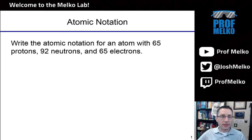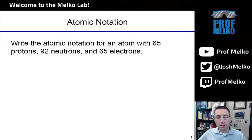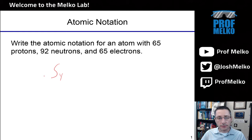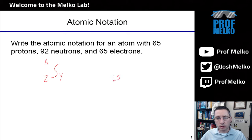Let's start with this practice problem on atomic notation: writing the atomic notation for an atom with 65 protons, 92 neutrons, and 65 electrons. If you recall, atomic notation looks something like this — the element symbol (Sy), the atomic number (sometimes abbreviated Z), and the mass number (sometimes written A). The atomic number is the number of protons, so here with 65 protons, Z equals 65.